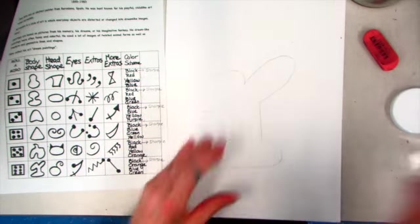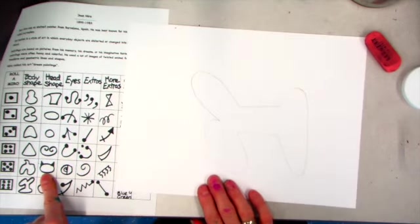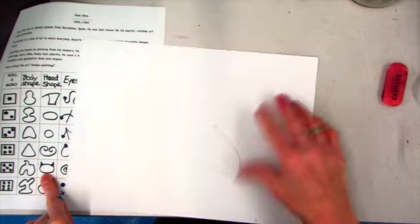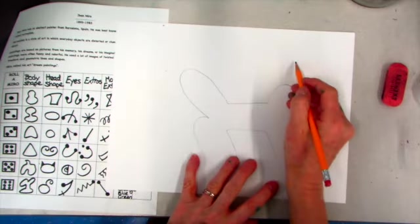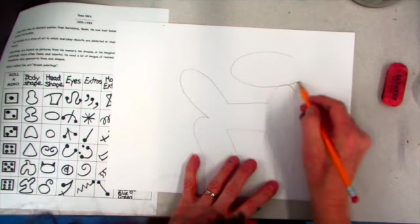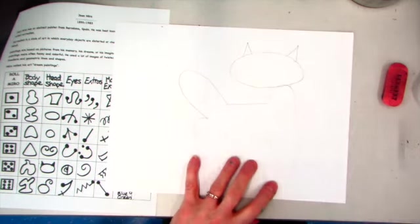Next, we're looking for the head shape. I rolled a 5, it's the cat head. And now I'm going to turn my paper around to find the best direction, and then I'm going to draw my cat head where it looks right to me.